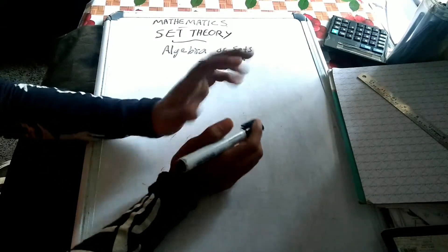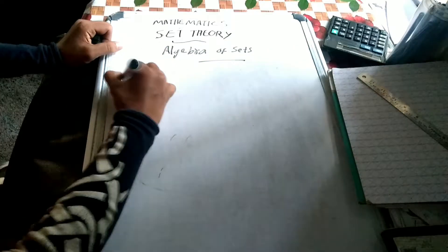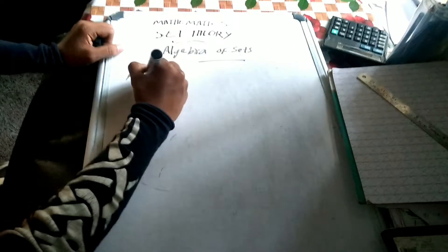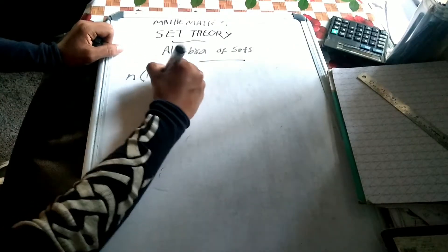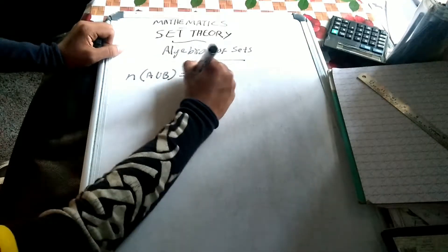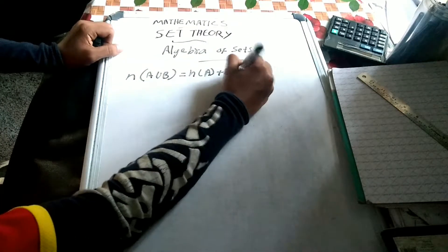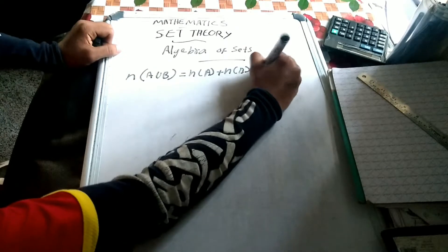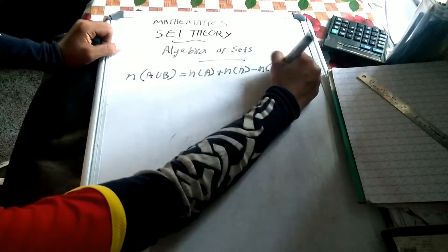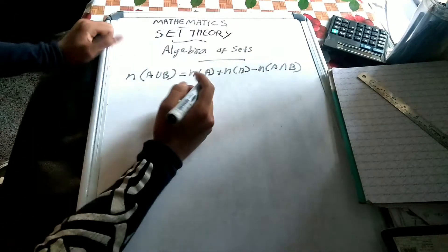First of all, the formula for algebra of sets: n(A union B) is equal to n(A) plus n(B) minus n(A intersection B).